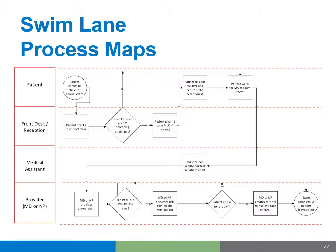Another technique you can use is called swim lane process mapping. The quick approach is to create your process map just as you learned here, and then look at all the roles — not individual names — and create a horizontal row or swim lane for each role involved in the process. You can see the roles on the left-hand side in each of the red-bordered boxes. Next, take your process map and place each task according to who is responsible for completing that specific task while maintaining the connections between the steps. The end result is that you have a process map that clearly shows who is doing what in your process, and this can be a catalyst for further discussion about changes that need to be made, such as shifting responsibilities to reduce burden on an overloaded role. Note the example of the medical assistant swim lane here, with only one task in the process.